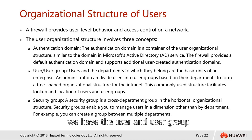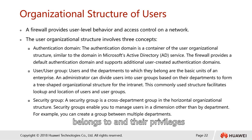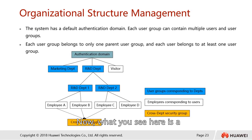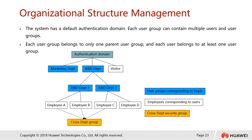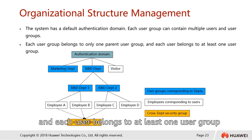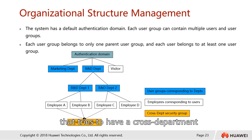We have the user and user group, which define which group a particular user belongs to and their privileges. A security group is usually for a cross-department group. Every user can only belong to one parent user group, and each user belongs to at least one user group. If any user has a cross-department role, this will usually be handled by the security group.